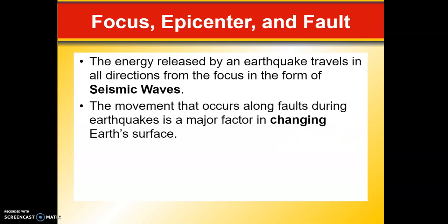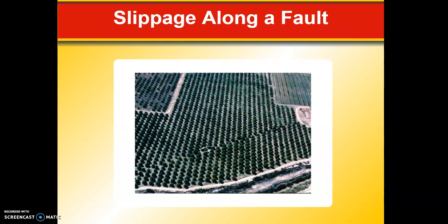The energy released by an earthquake travels in all directions out from the focus in the form of what we call seismic waves. The movement that occurs along faults during earthquakes is a major factor in changing earth's surface. Here we can see an orchard in California — you can see some of that slippage along the fault line. This ground moved this way and that ground moved that way.